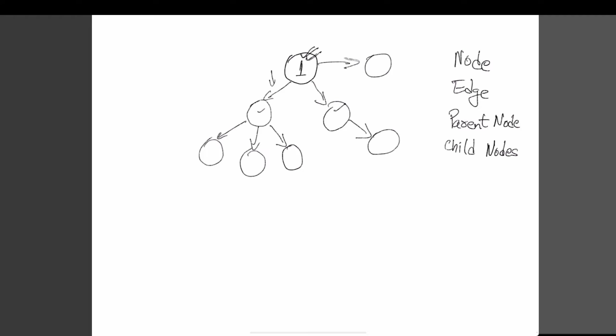The next topic is leaf nodes. In this tree, the last nodes — the ones that don't point to any other nodes — are like the terminal nodes of the tree. These are called leaf nodes.